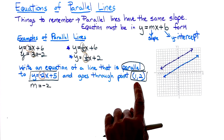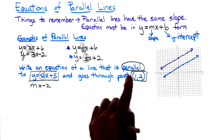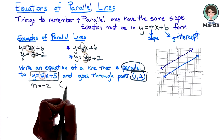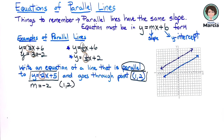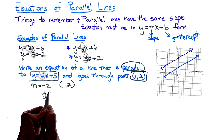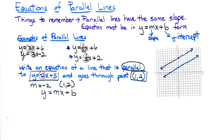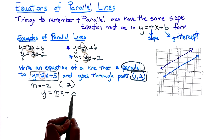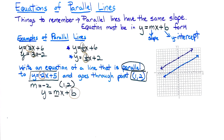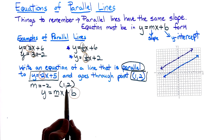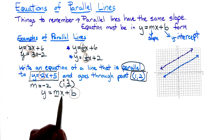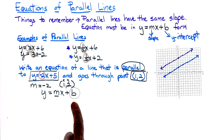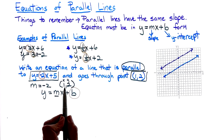I write down the slope m equals negative 2 and the point (1, 2). Using y equals mx plus b, we know the slope but need to find b. To find where the new line crosses the y-axis, we substitute in these given values. My y is 2, slope is negative 2, and x is 1.